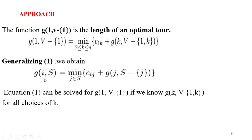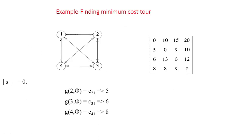In general, the function is written as g(i, S), where i is the city you are currently at, and S is the set of cities still to be visited. It equals the minimum over j belonging to S of c(i,j) plus g(j, S minus j). This is the mathematical function used to solve the Traveling Salesperson Problem.